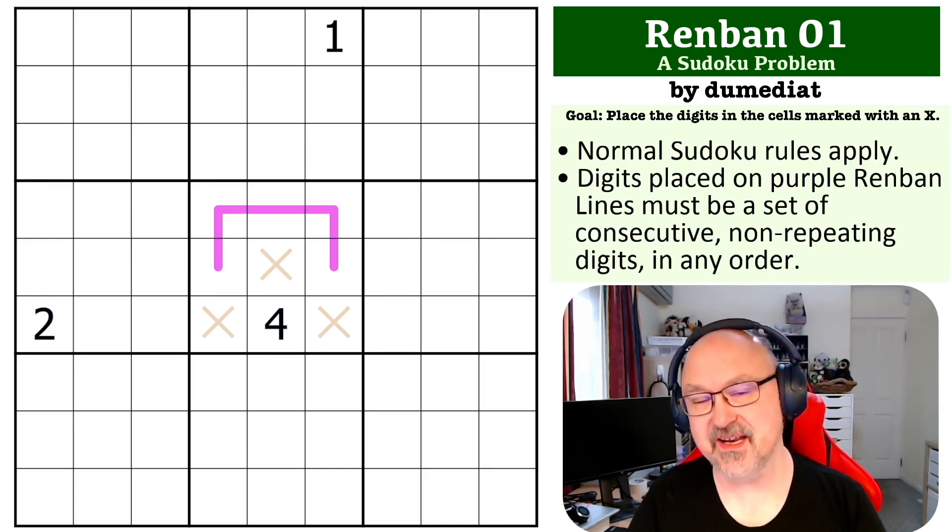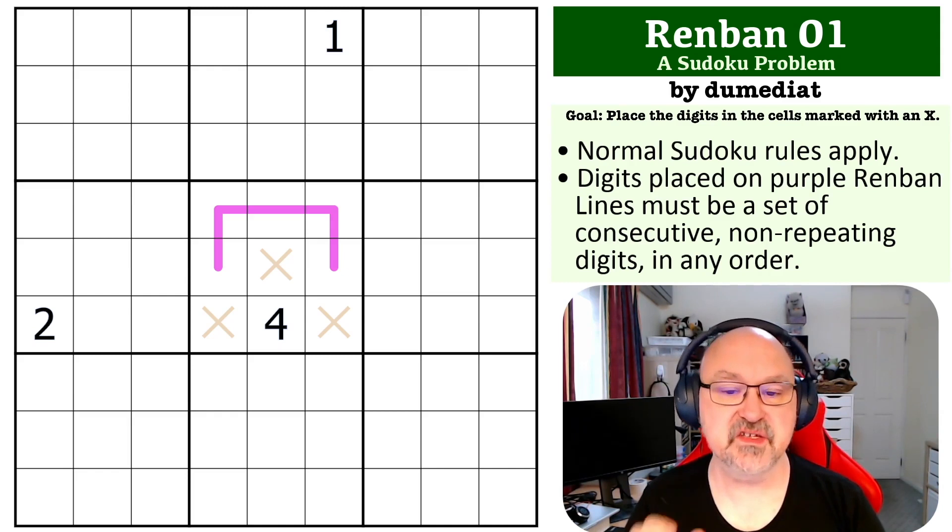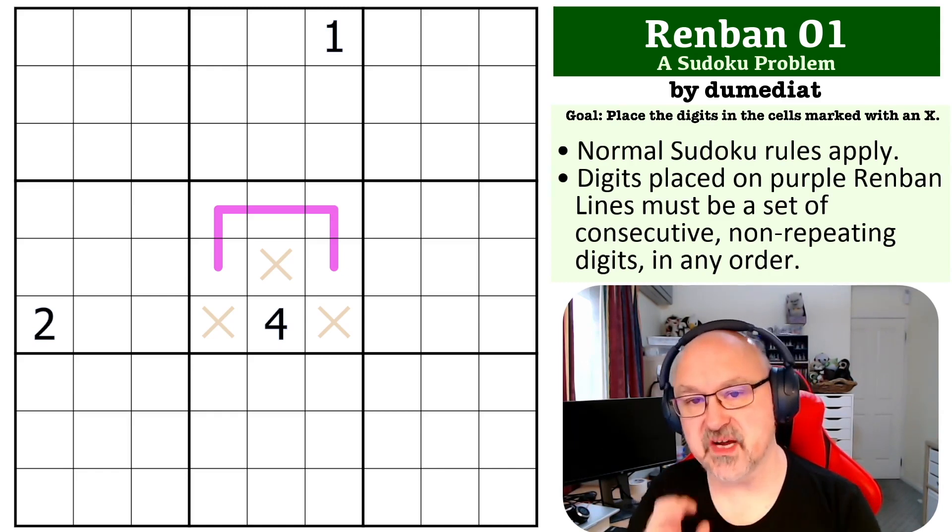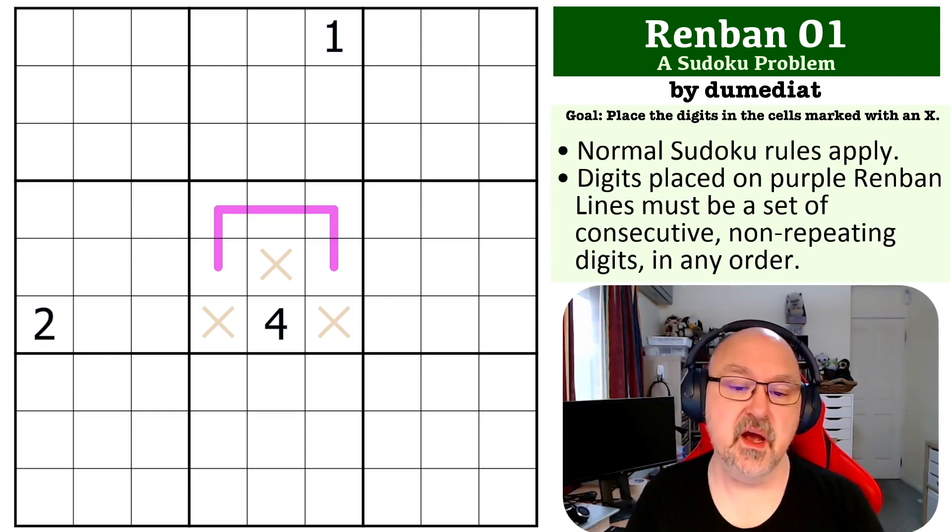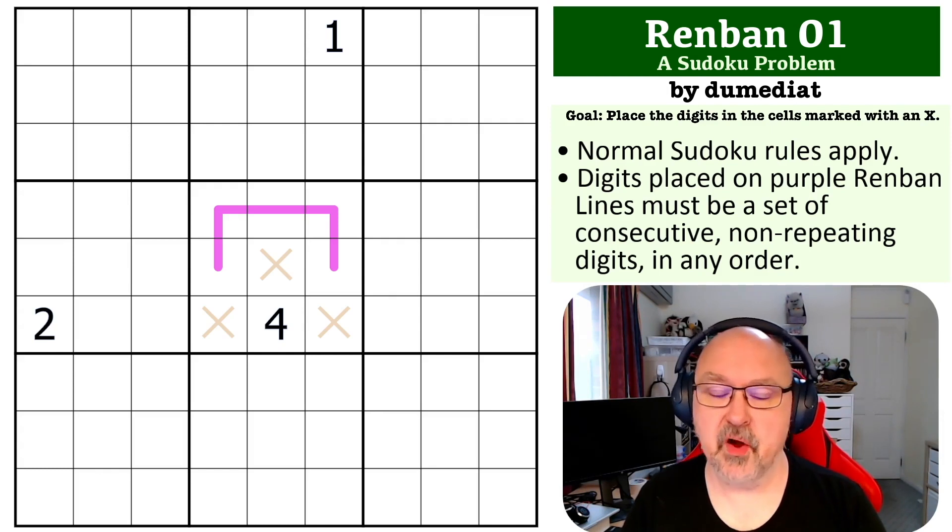What that means is you can put any digits on them. However, if you were to take those digits off the line and sort them, they would be a run of digits without gaps. Hopefully you've seen Renbans before, but the rules should help you understand them.